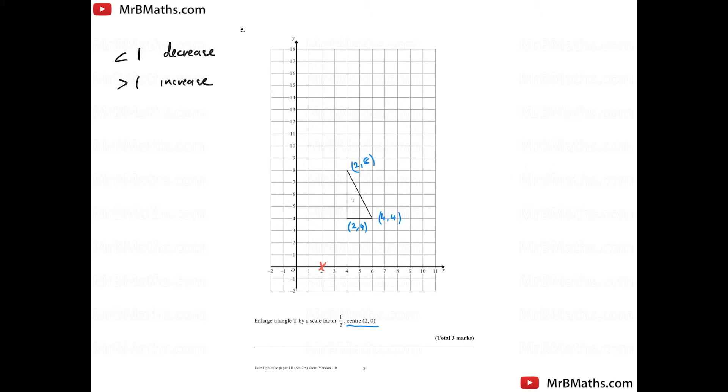Now, because I've measured from that center point, I need to apply the scale factor. In this case, it's half. So what I'm going to do is times all of these coordinates by half.